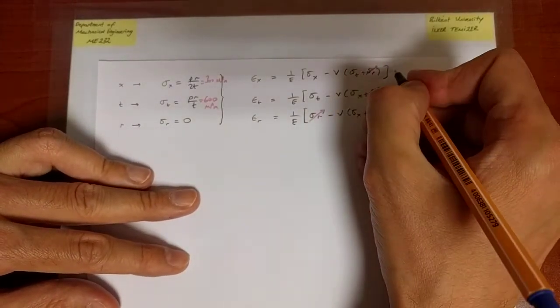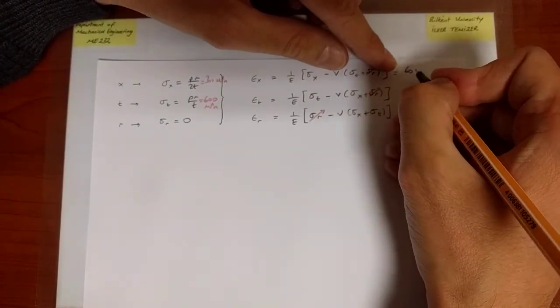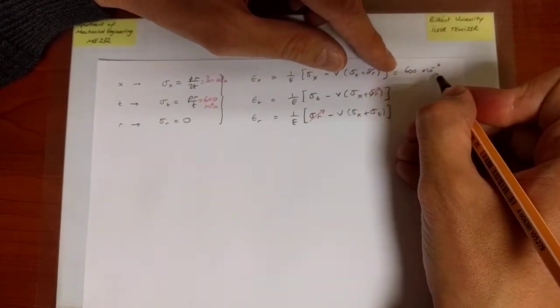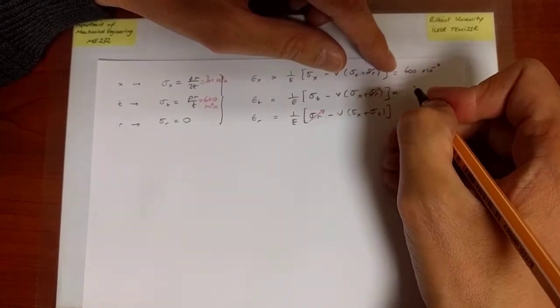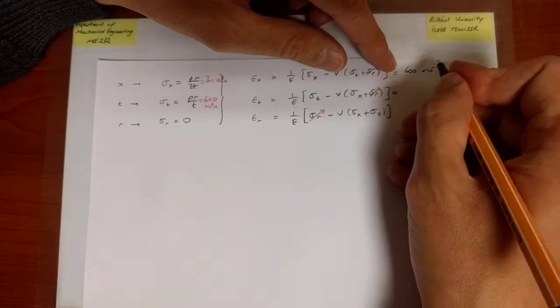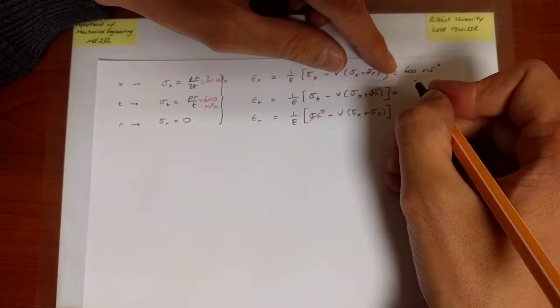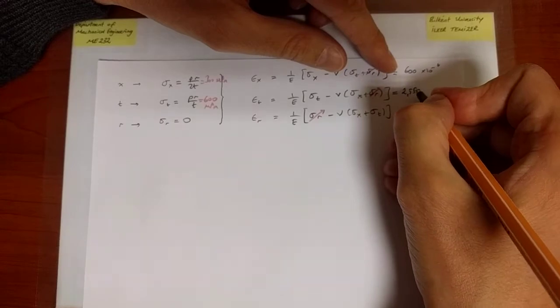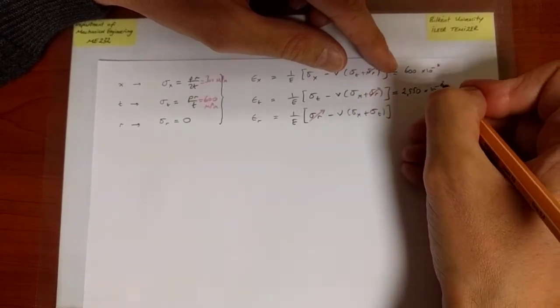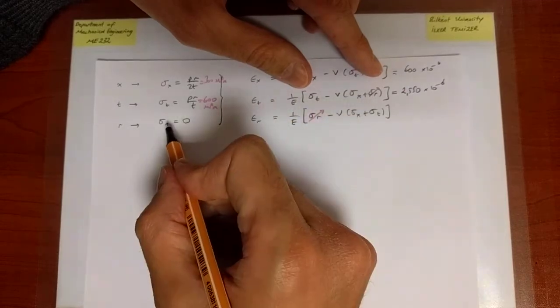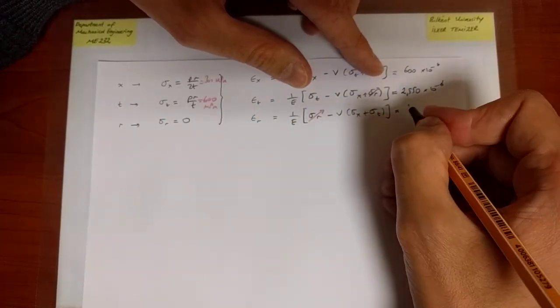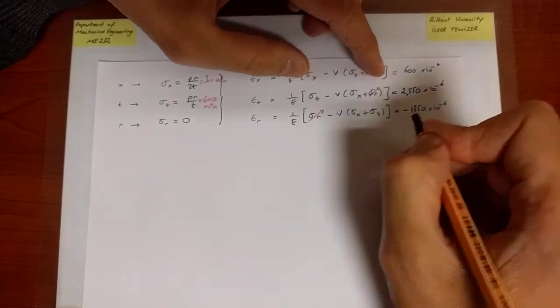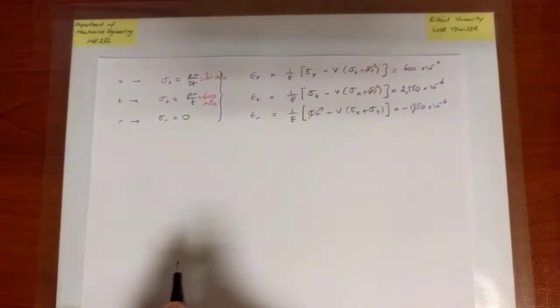So I invite you to do that on your own. You will find that epsilon_x is equal to 600 times 10^-6—it's unitless, I can alternatively call it 600 microstrains. Epsilon_t would be larger, equal to 1,350 microstrains. And we see that despite the fact that we don't have a radial stress, we do have a radial strain, and that is the effect of generalized Hooke's law, and it's -1,350 microstrains.